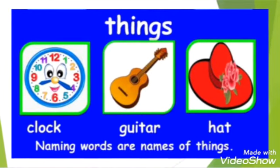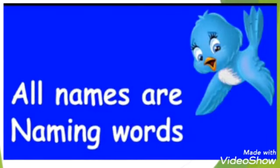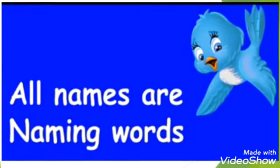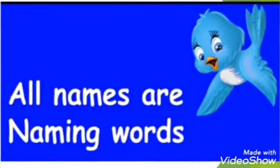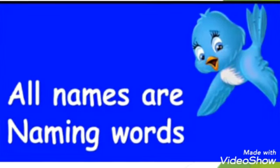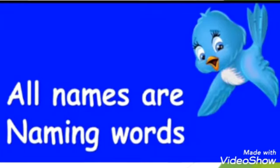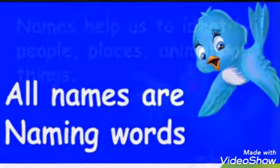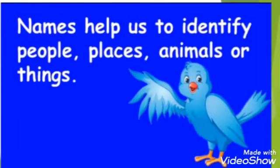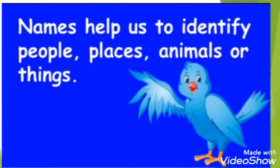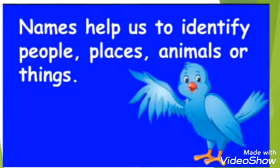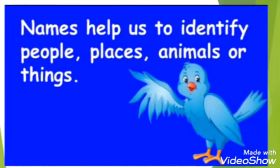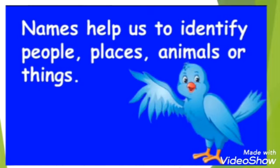Now, look around you. How many things can you see? Can you identify them by their name? So, all names are naming words — either they are a person's name, a place's name, or an animal's name. Names help us to identify people, places, animals, or things.